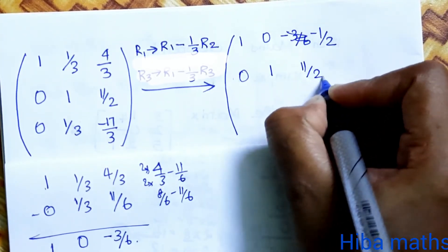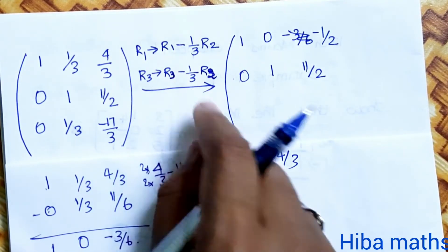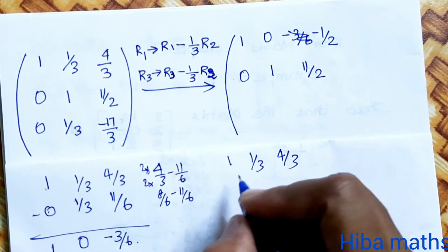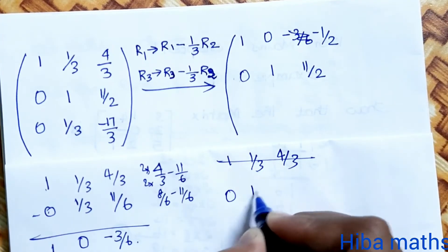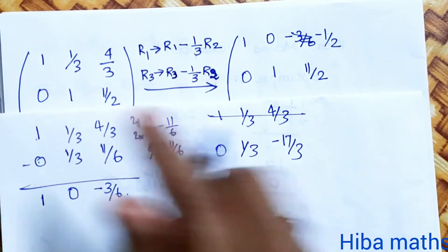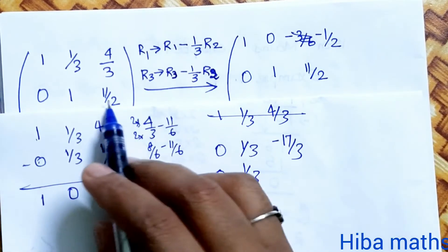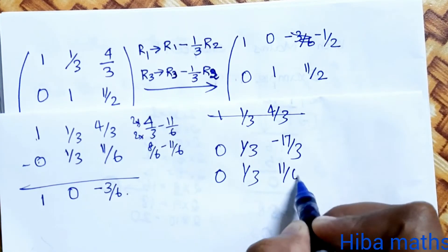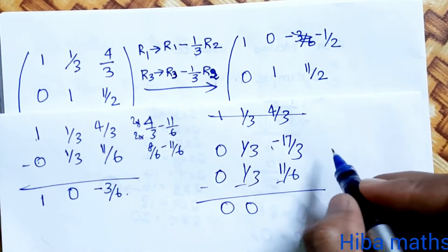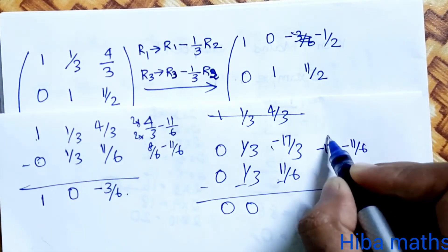R3 changes to R3 minus (1/3) times (11/2), which is 11/6. R2 entry involves minus 11/6 times 2, giving -17 and -34 in the working. Further operations on R2 continue.